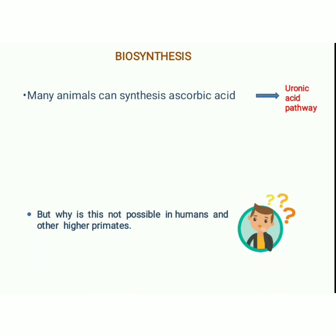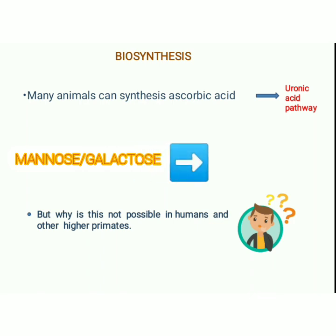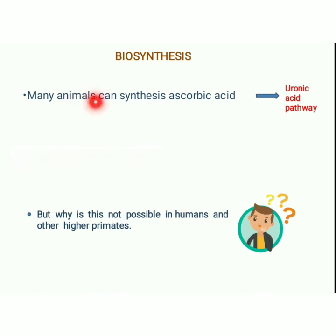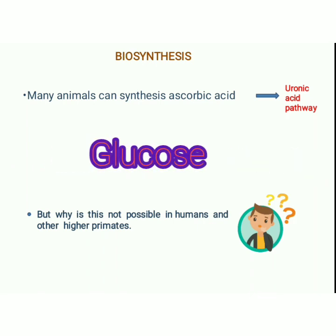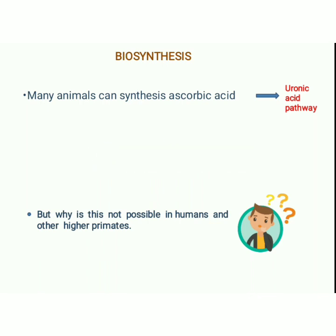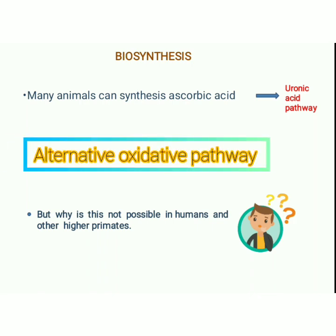Biosynthesis: Most plants and animals can synthesize ascorbic acid on their own. In plants, after a sequence of various steps, Vitamin C is synthesized through the conversion of mannose or galactose into ascorbic acid. In animals, it is a glycogenolysis-dependent process. Glucose is the starting material, which after a sequence of various enzyme-driven steps is converted into ascorbic acid through the uronic acid pathway. This uronic acid pathway is also an alternative oxidative pathway of glucose.